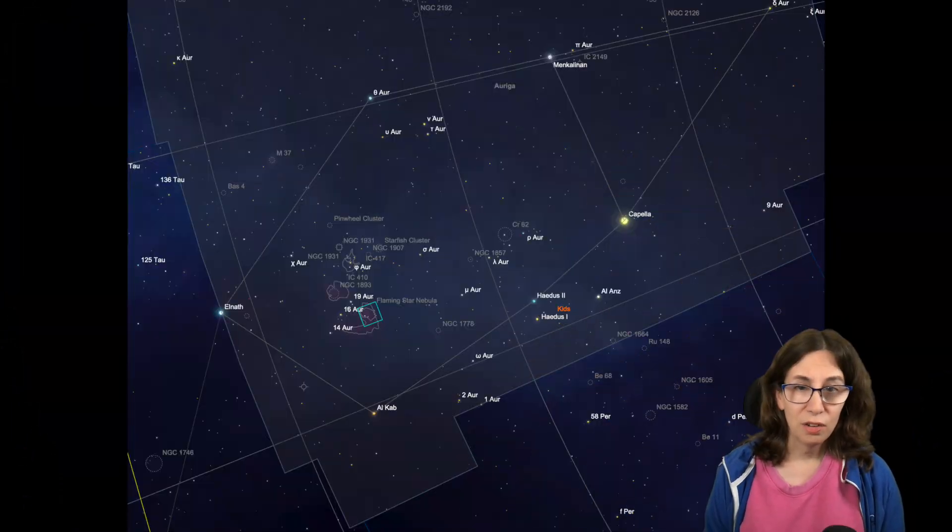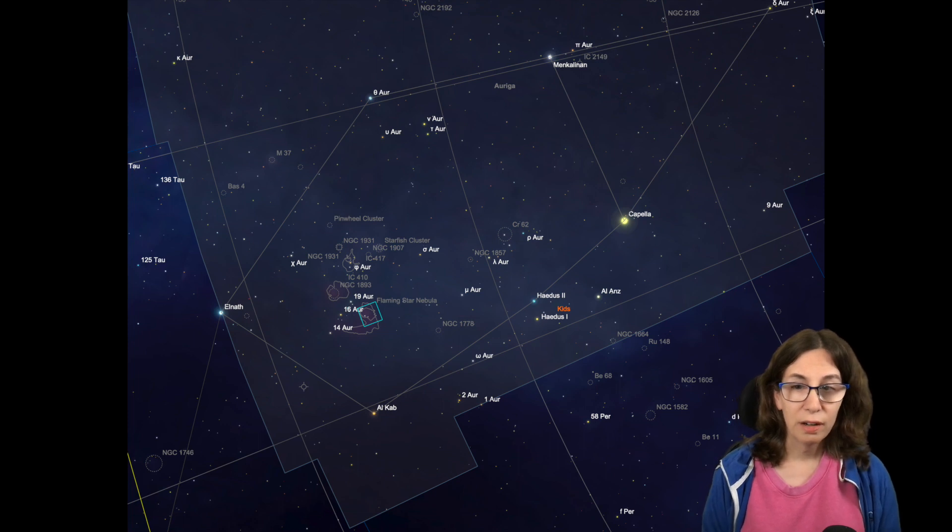Before we can answer that, let's take a look at what we're talking about. The Flaming Star Nebula, also known as IC-405, Caldwell-31, LBN-795, and Sharpless-229, is an emission and reflection nebula in Auriga.